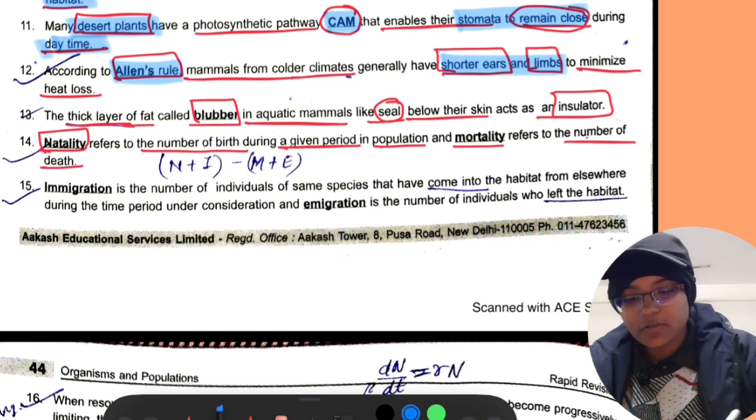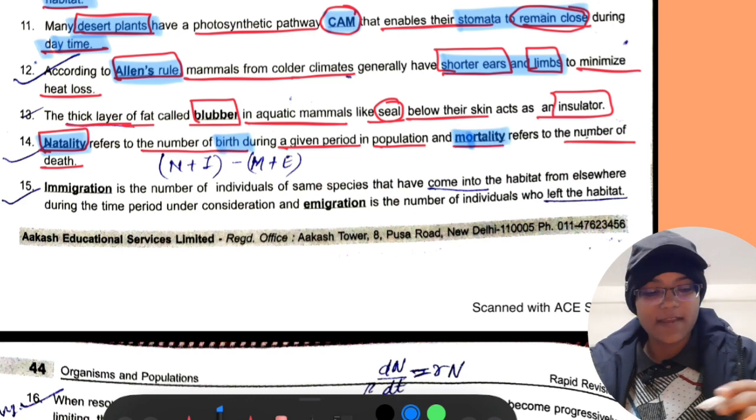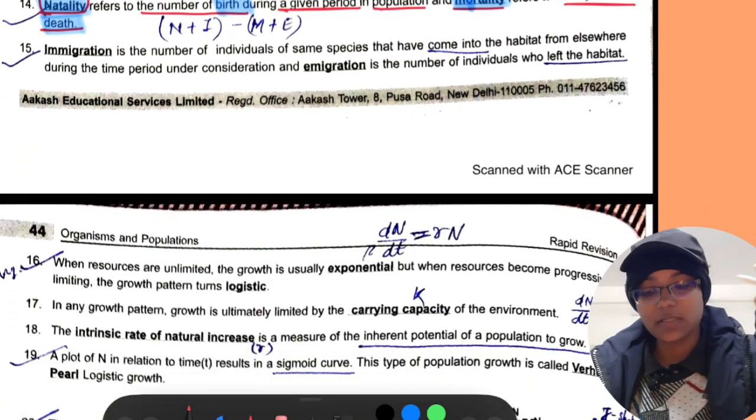Natality refers to the number of births during a given period in a population and mortality refers to the number of deaths.